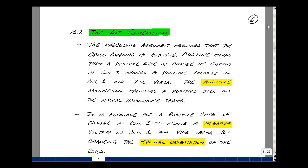In our last video, we assumed that the cross-coupling between coils was additive. What additive means is that a positive rate of change of current in coil 2 induces a positive voltage in coil 1, and vice versa.